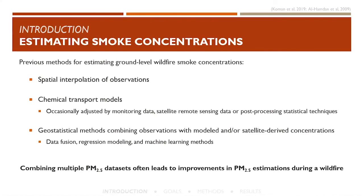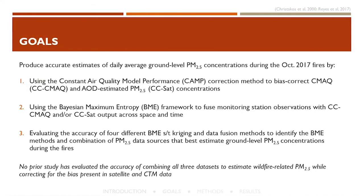Our goal was to produce accurate estimates of daily average ground-level PM2.5 concentrations during the October 2017 fires. We first bias-corrected CMAQ model and AOD-estimated PM2.5 concentrations, then used those corrected outputs as data in the Bayesian maximum entropy framework to fuse them with observations. We evaluated four different approaches to determine which BME method and which combination of PM2.5 data sources best estimated ground-level concentrations. No prior study had evaluated the accuracy of combining all three data sets while also correcting for bias in satellite and CTM data.